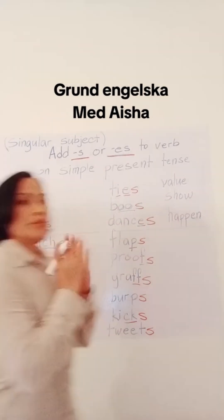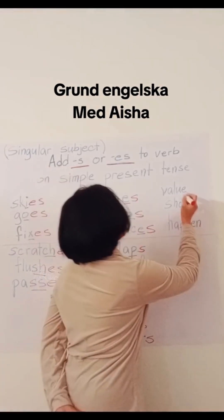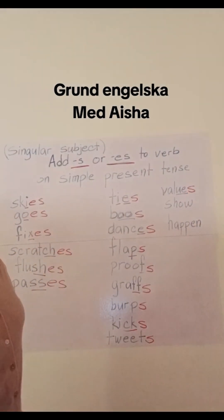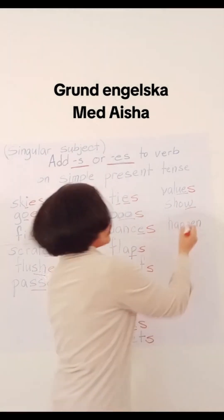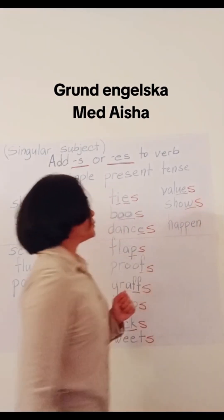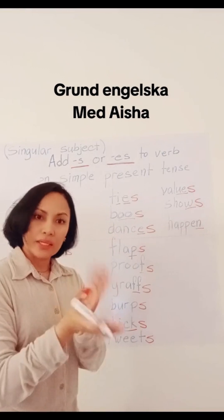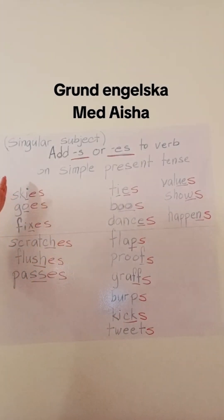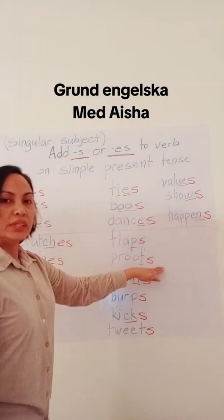Now another thing: if we have a double vowel — u and e — you just have to add s. Values. Show — if it ends with w, you just have to add s. Now if we have n, like happen, we need to add s. So these are the verb endings that need es, and these are the verb endings that need only s.